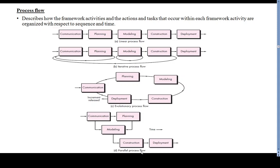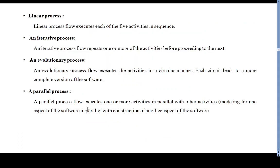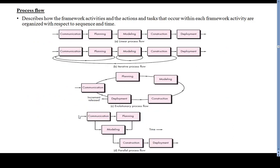Parallel process flow executes one or more activities in parallel. For example, communication and planning may occur in parallel. A parallel process flow executes one or more activities in parallel with other activities — for instance, modeling one aspect of the software while constructing another aspect simultaneously.